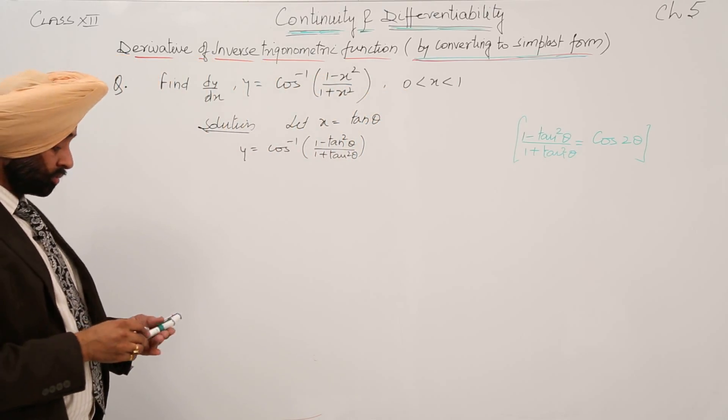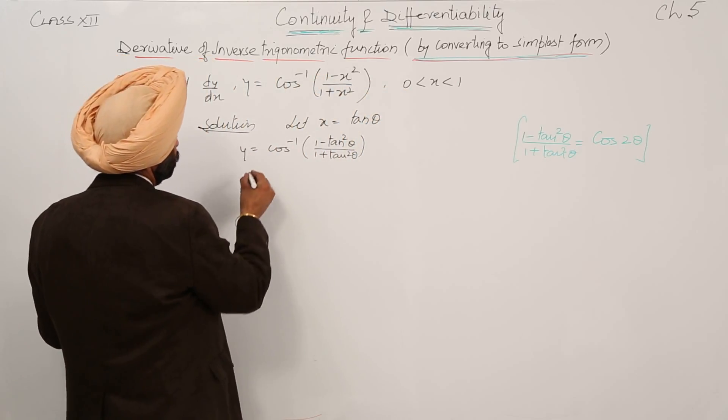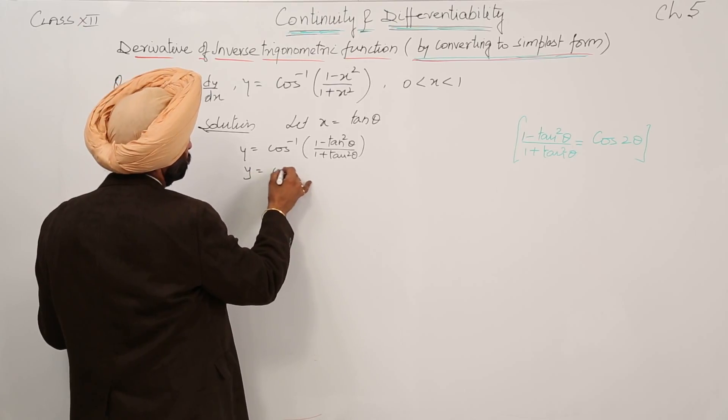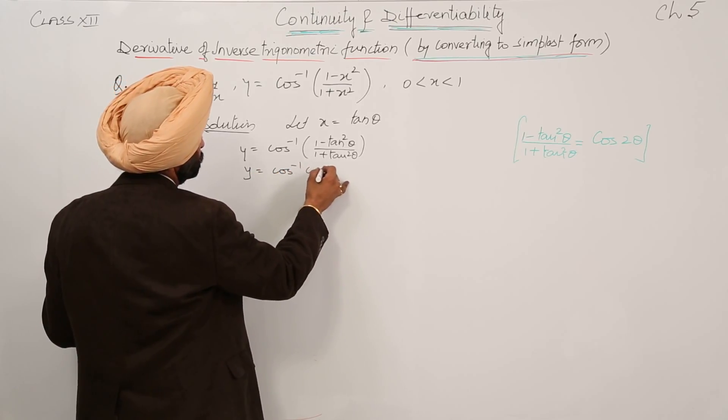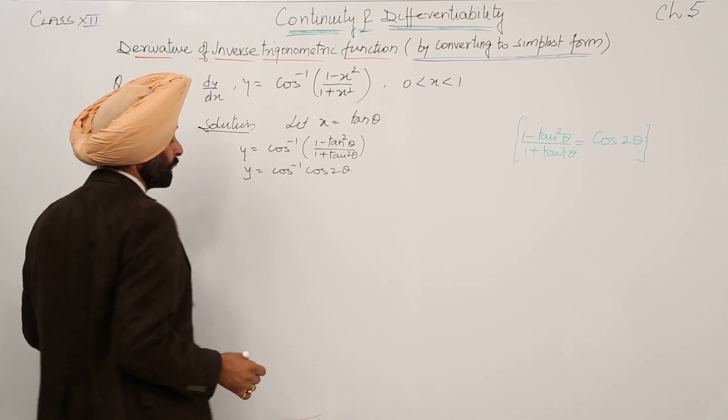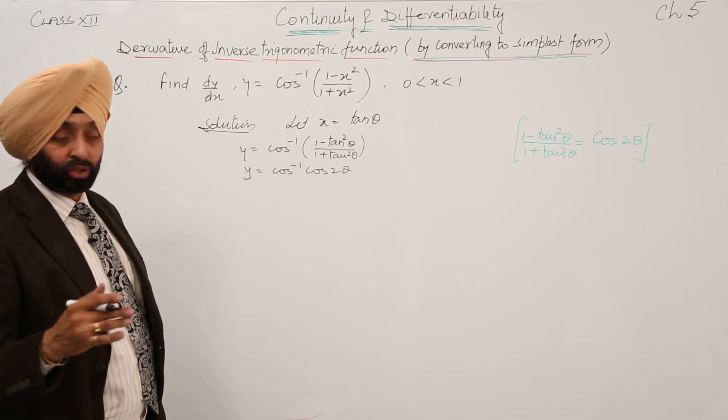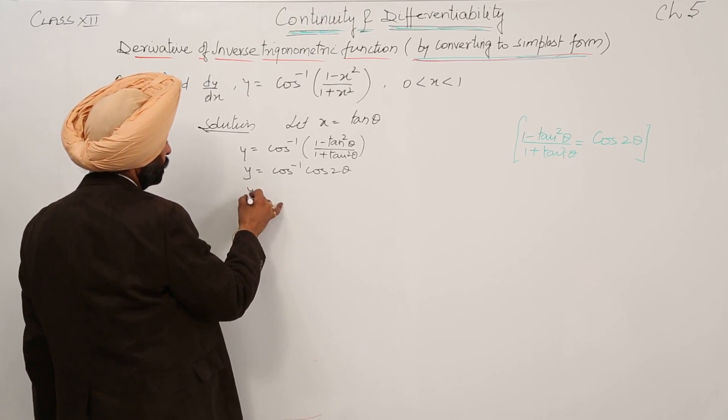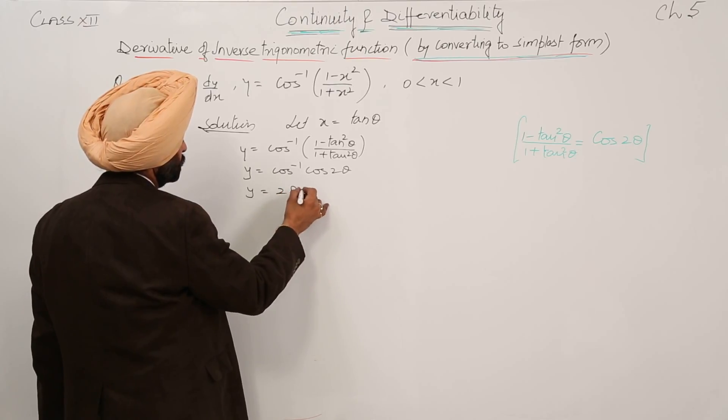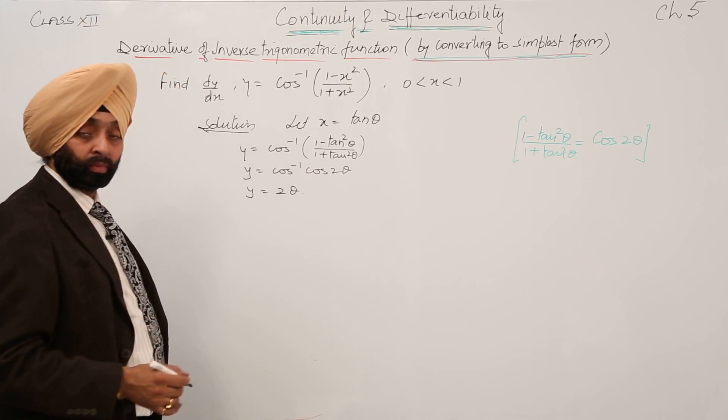So, substituting this, now cos 2 theta, what we are having? y is equal to cos inverse cos 2 theta. Again, by the definition of the inverse, we are having y is equal to 2 theta.